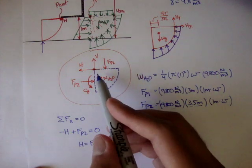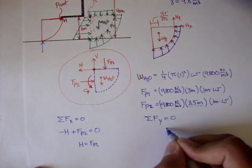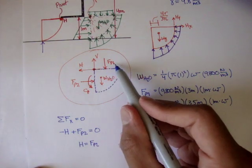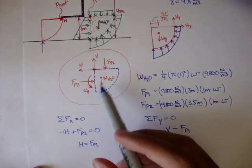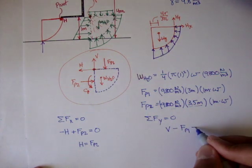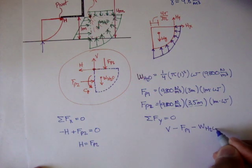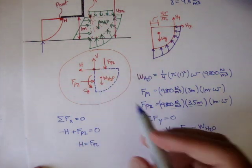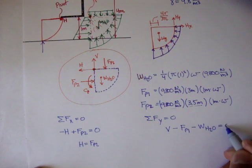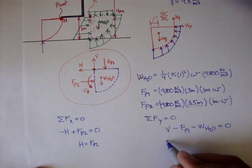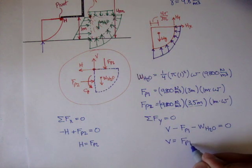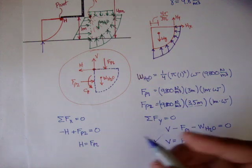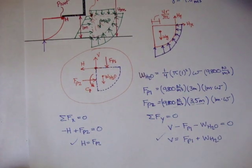For the Y direction, we have positive V, and then minus FP1, and we also have the weight of the water, so minus the weight of the H2O. It doesn't look like there are any more vertical forces, and that's equal to zero. If you solve for V, you get V is equal to FP1 plus the weight of the water. So we have V and we have H.